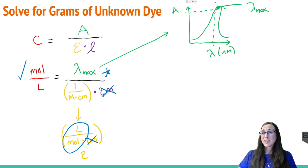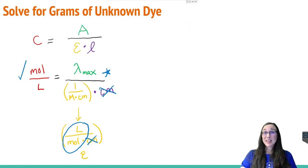So now that we know the units check out, how do we solve for the grams of the unknown dye or the unknown chemical that we're interested in from the lab?